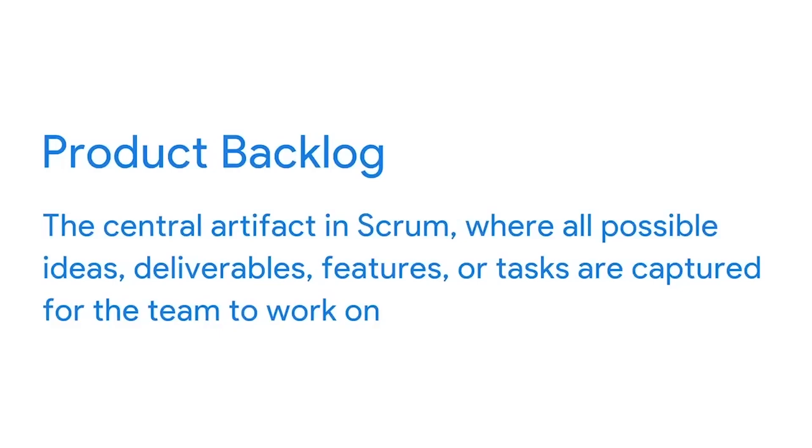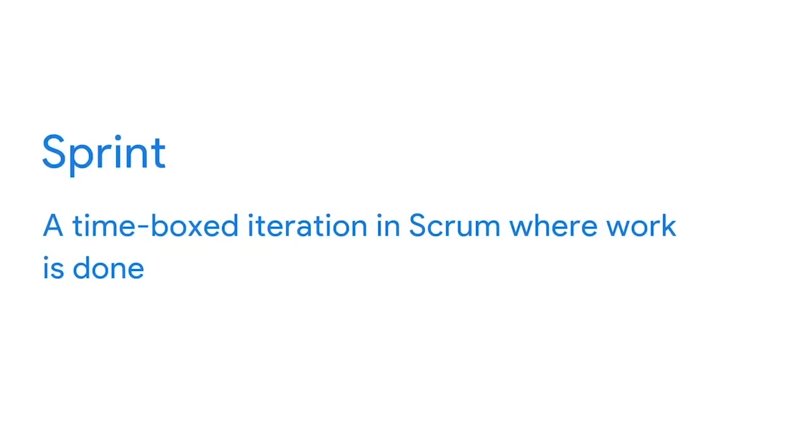Let's review some terms and concepts specific to Scrum. The backlog is the central artifact in Scrum, where all possible ideas, deliverables, features, or tasks are captured for the team to work on. It's prioritized and proactively managed by the team continuously throughout the life of the project. The sprint is the name of the time-boxed period in Scrum where work is done. The sprint can be between one and four weeks long, but most sprints are around two weeks. This is often called the iteration.